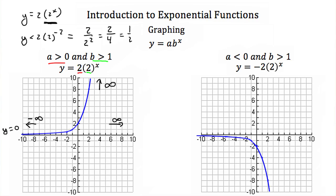For the case where a is less than 0 and b is greater than 1, here a equals negative 2 and b equals 2. The graph is exactly the same shape but flipped over the x-axis. As x approaches negative infinity we still approach y equal to 0, but from the negative side. As x goes to positive infinity, y goes to negative infinity — a very large negative number.